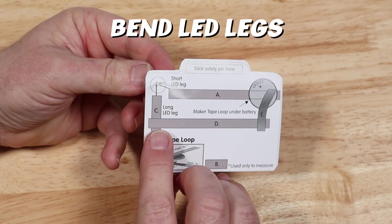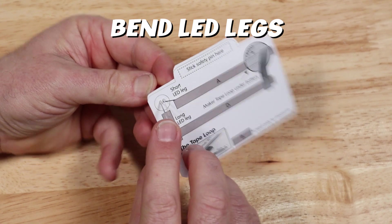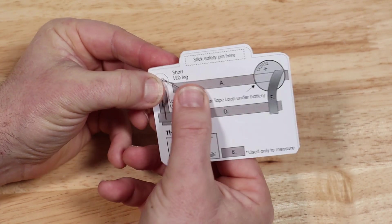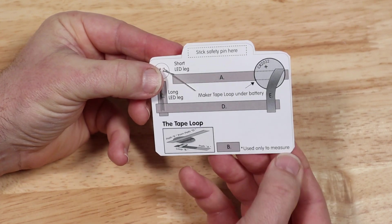Now we're going to bend the LED legs. The longer one gets bent down across C and the short leg gets bent over A.